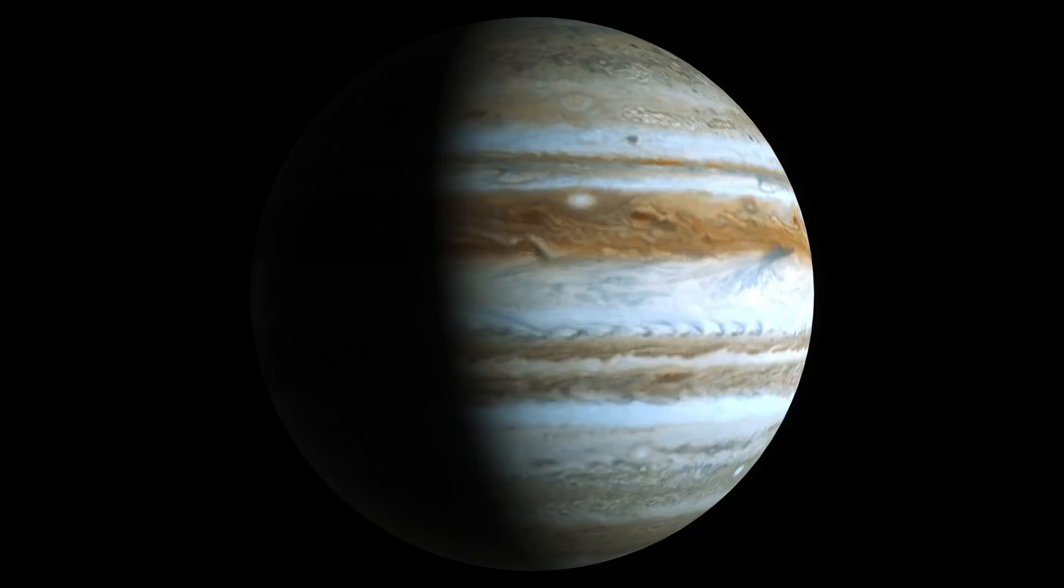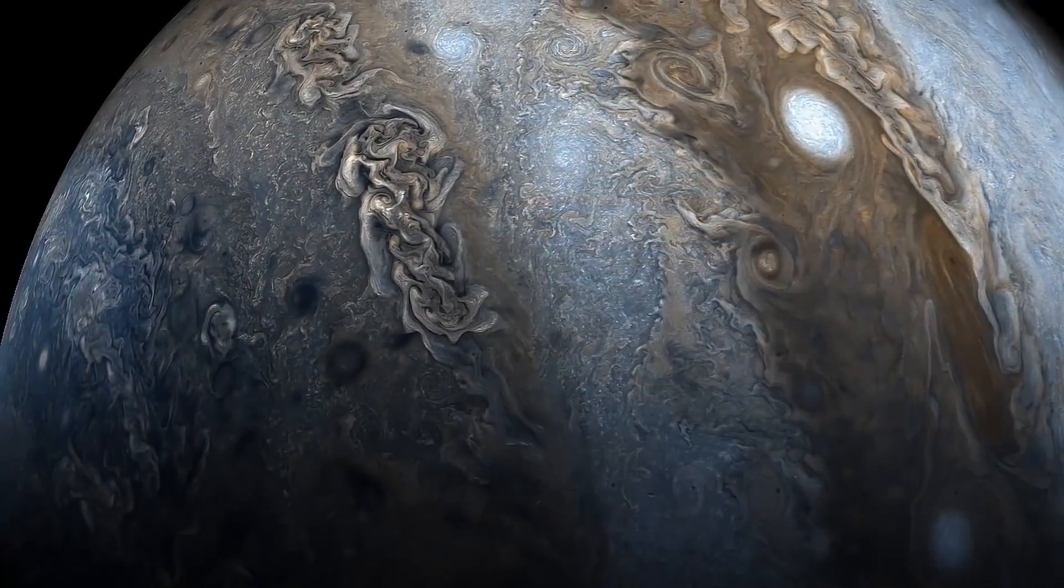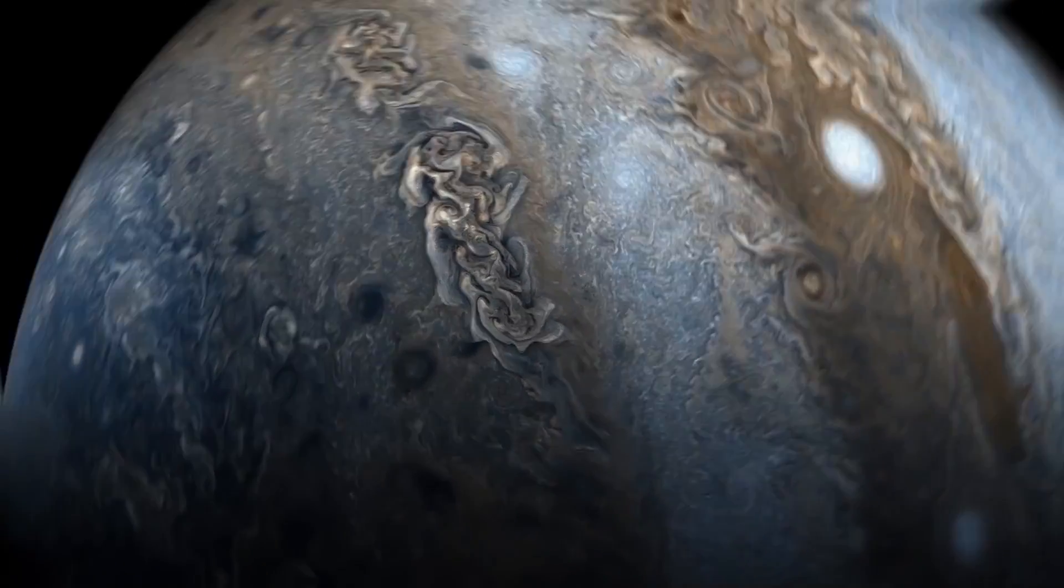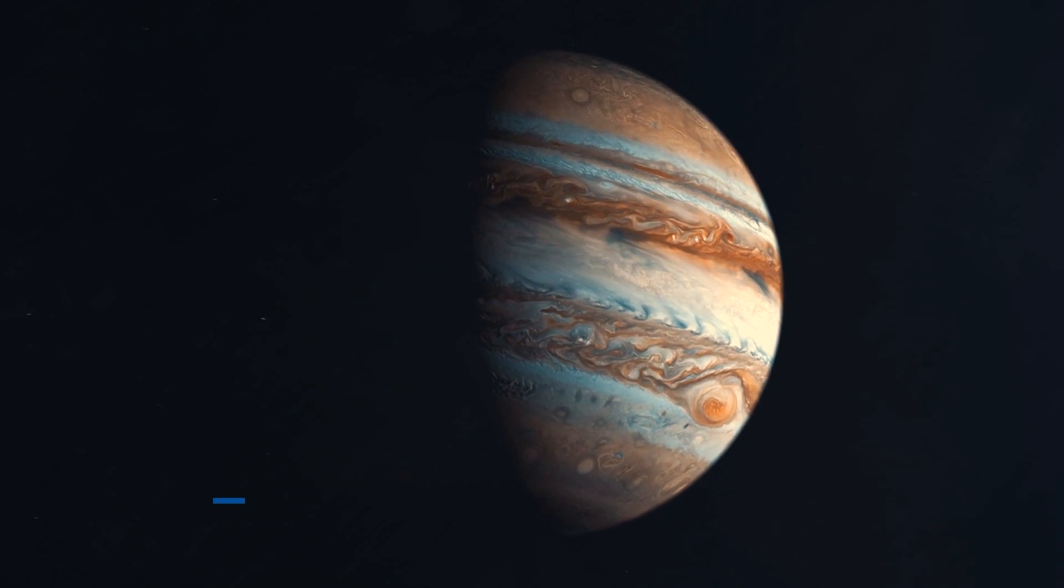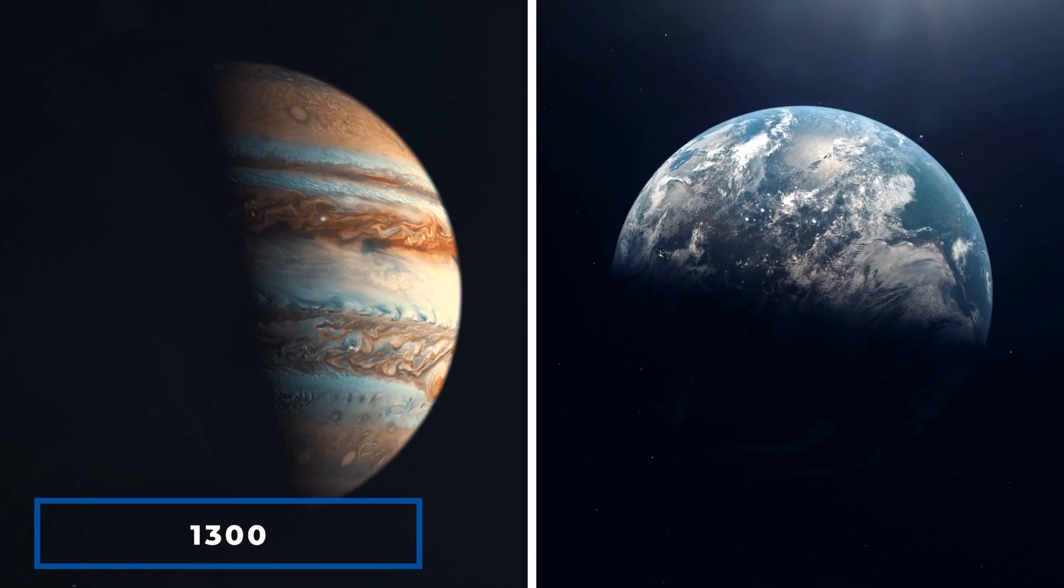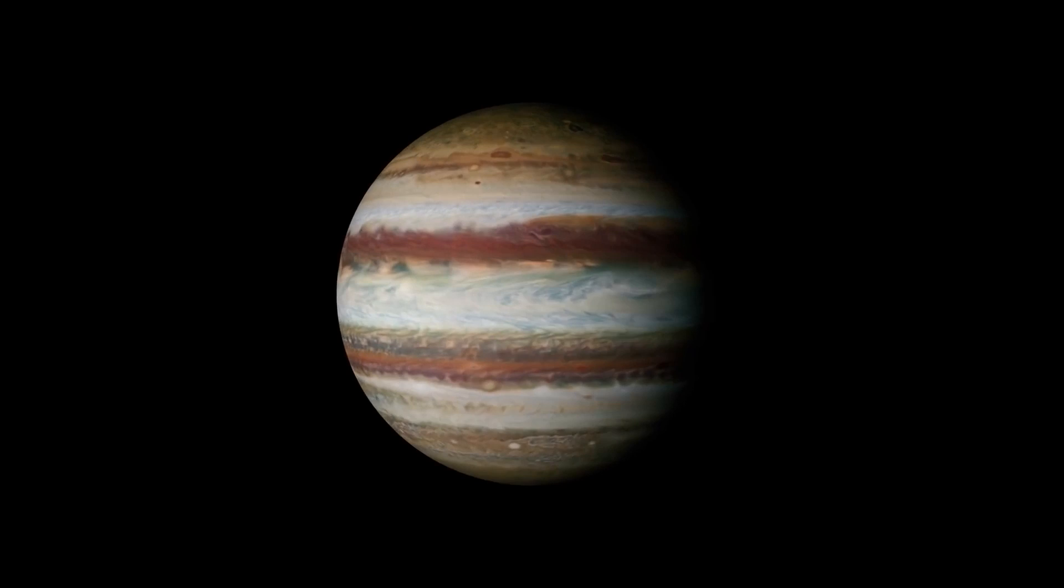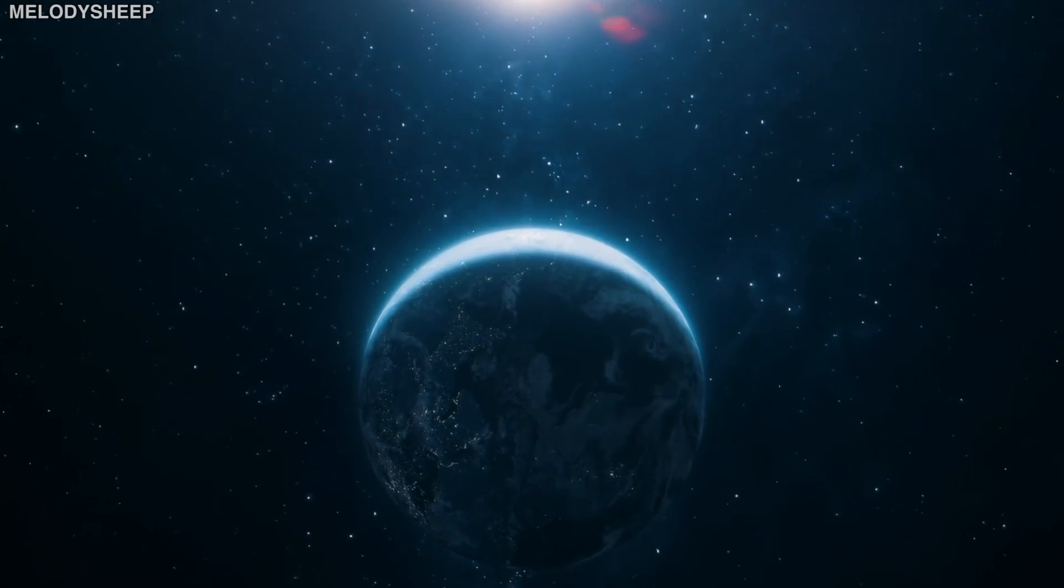According to NASA, Jupiter is more than twice as big as the rest of the solar system combined. Jupiter's massive size could hold more than 1,300 Earths. If Jupiter were the size of a volleyball, Earth would be the size of a blueberry.